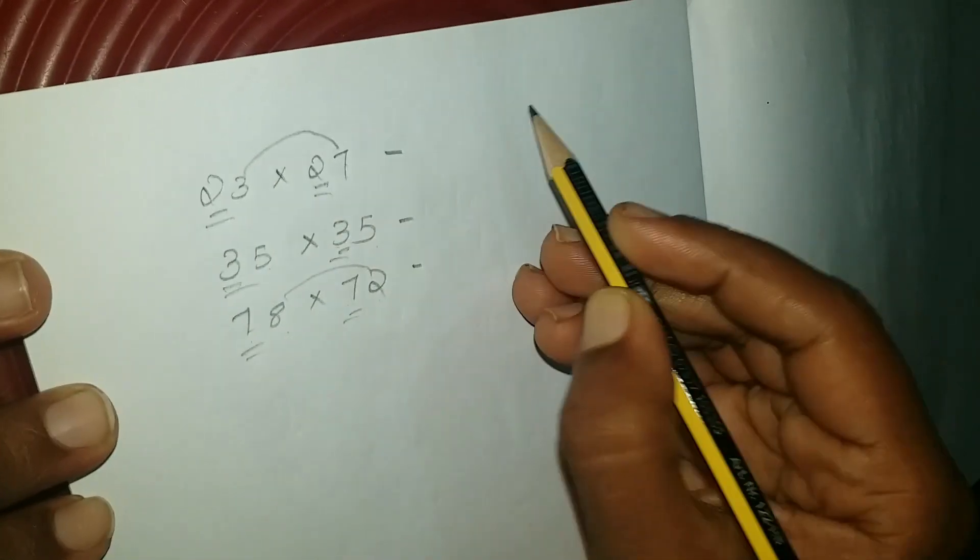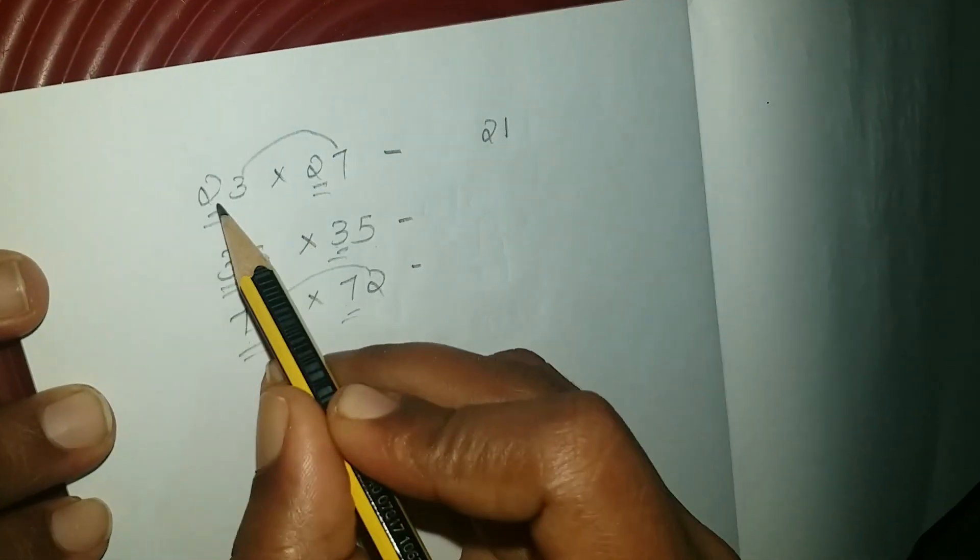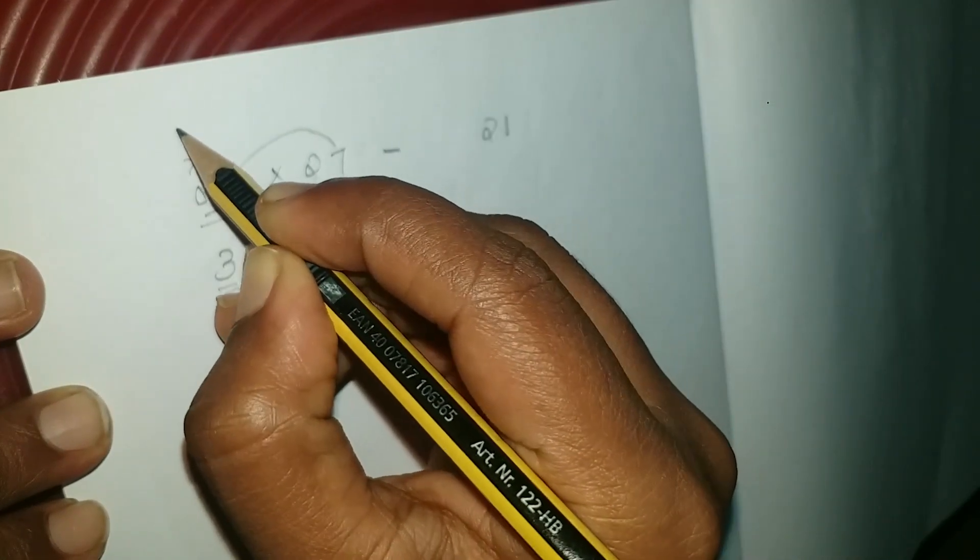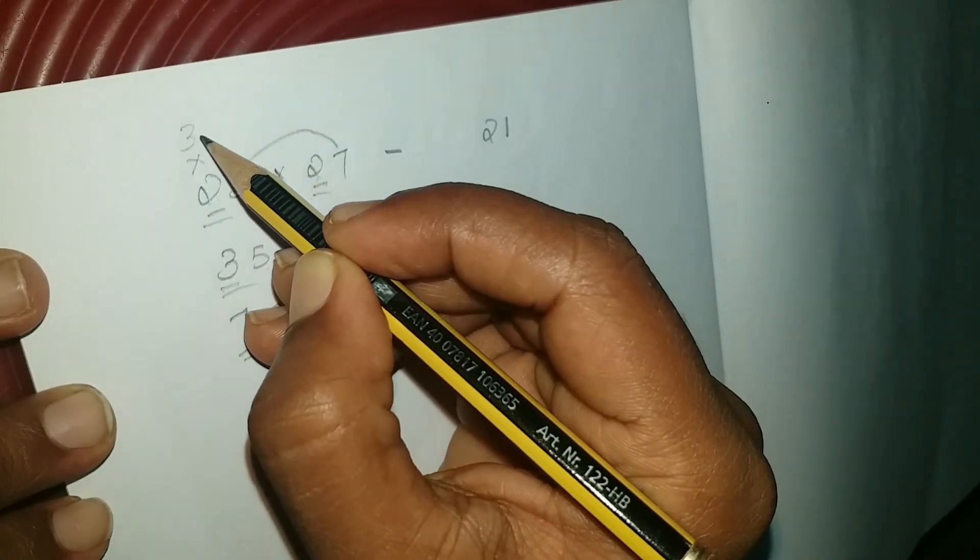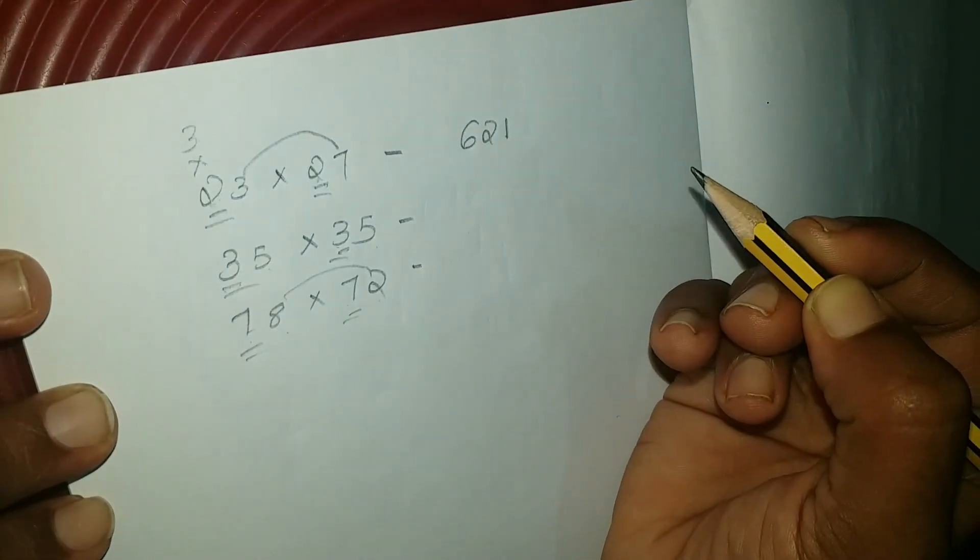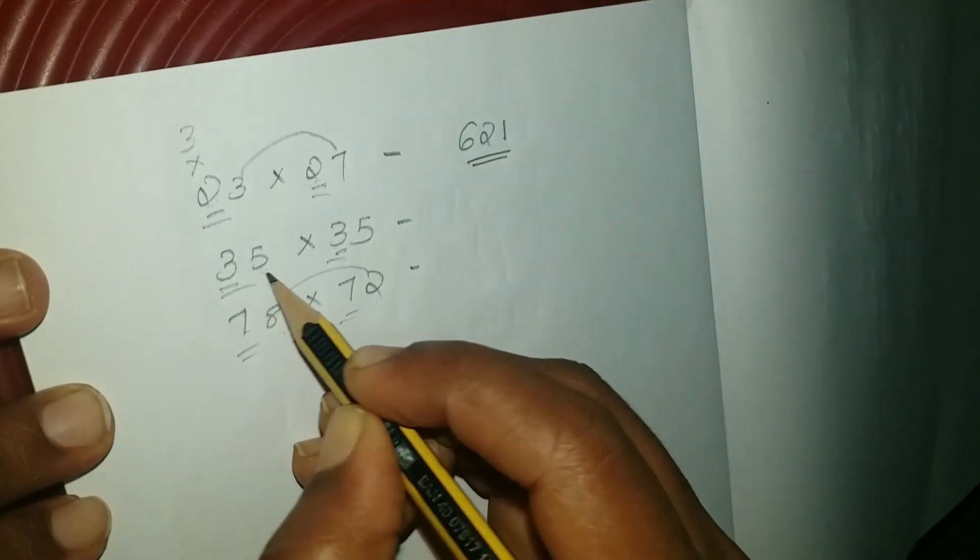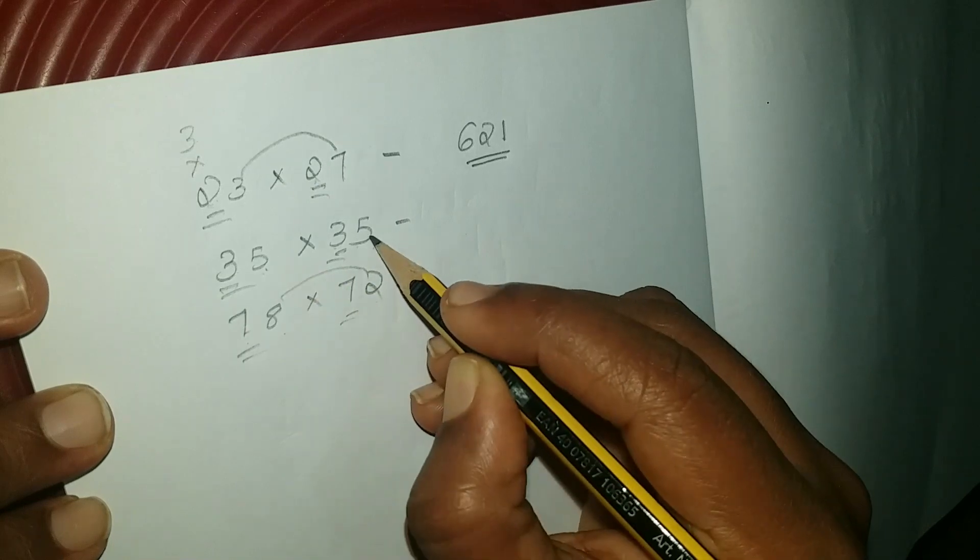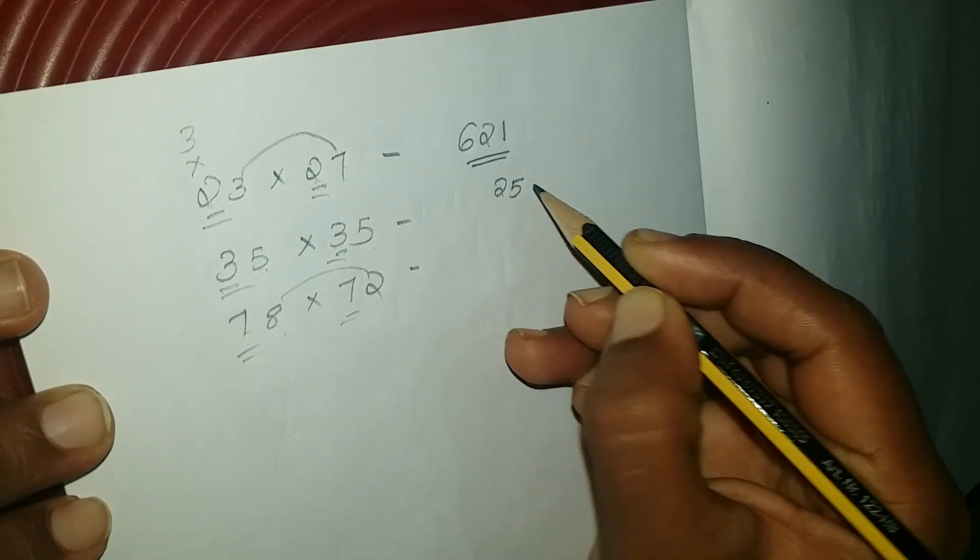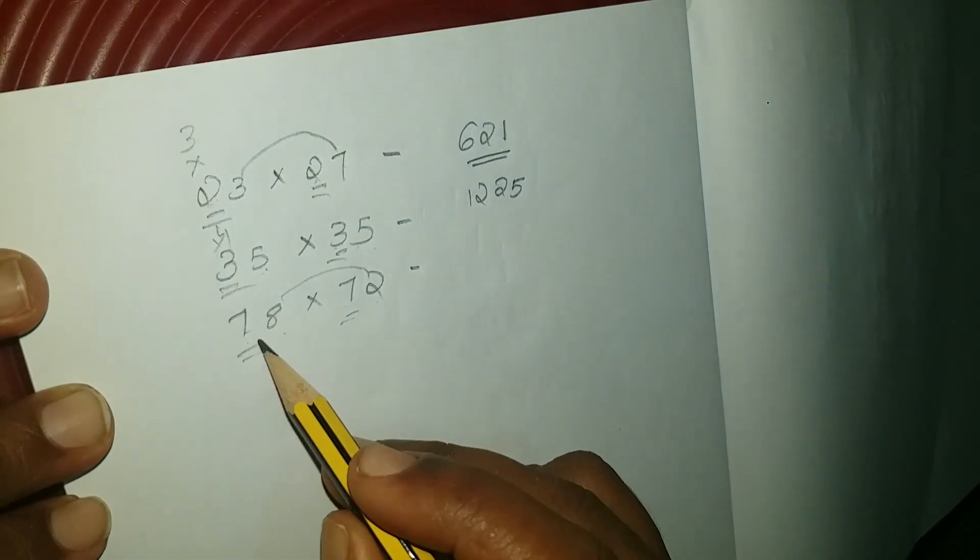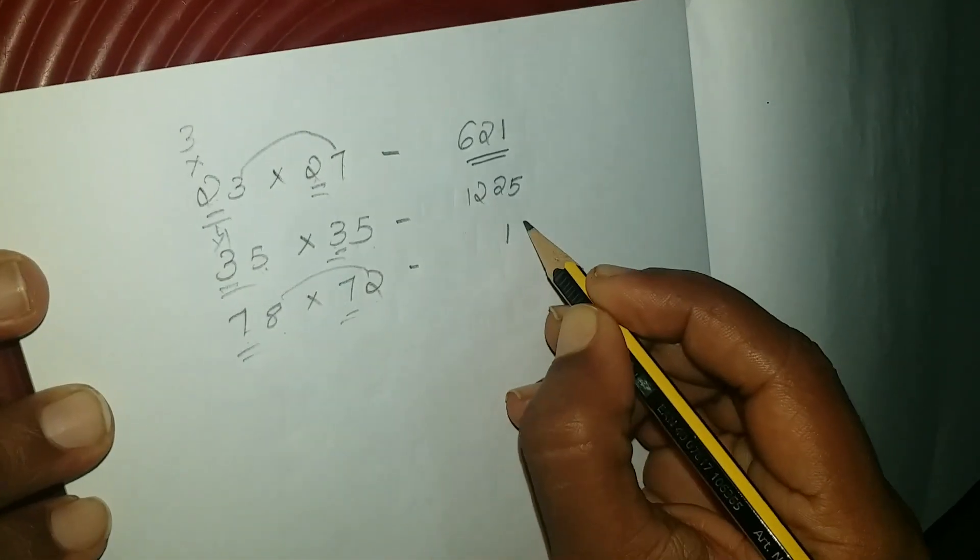Again, 7 divided by 3 is 21. 2 divided by 2 are 2, 2 sources are 2 and 3 for 2. The answer is 621. The answer is 35 is 35. The answer is 5 is 5 is 25. 3 is 4 is 12. Let's do this.